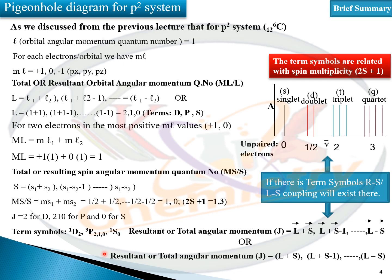If any term symbol has been determined, it means that LS coupling (Russell-Saunders coupling) exists. In any type of term symbol calculation, you will have to use the LS or RS coupling scheme. Singlet means both electrons are paired; when both electrons are paired and the spin multiplicity is 1, you get a singlet. Similarly, doublet, triplet, and quartet correspond to higher multiplicities.